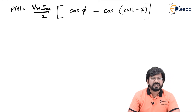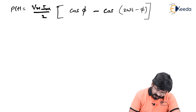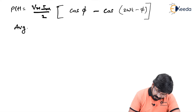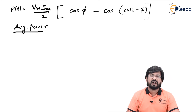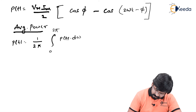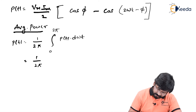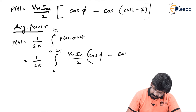It is very difficult to work with instantaneous power, so our aim is to calculate average power — power over a cycle. Average power P is 1/(2π) times the integral from 0 to 2π of p(t) d(ωt), which equals 1/(2π) times the integral of [Vm·Im/2 · cosφ − cos(2ωt − φ)] d(ωt).